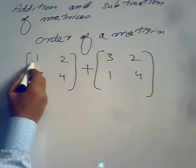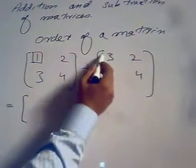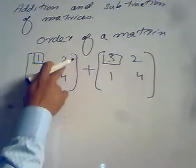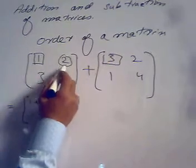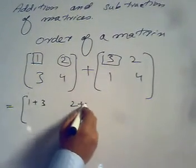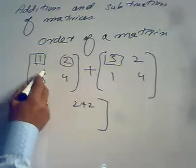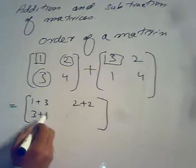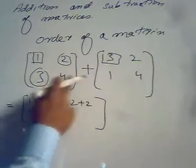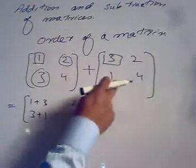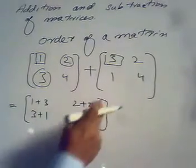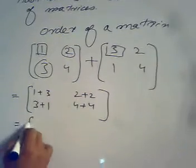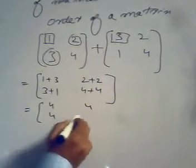When the order is the same, we add the corresponding elements. Element 1 is added to 3, giving 1 plus 3. Element 2 is added to 2, giving 2 plus 2. Element 3 is added to 1, giving 3 plus 1. And 4 is added to 4 — the element of the second row, second column — giving 4 plus 4. The resultant matrix is [4, 4; 4, 8].